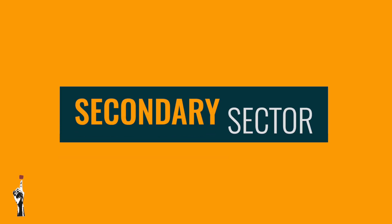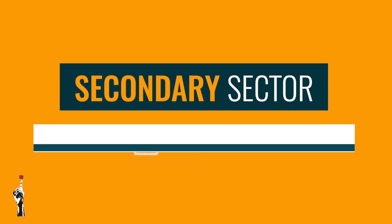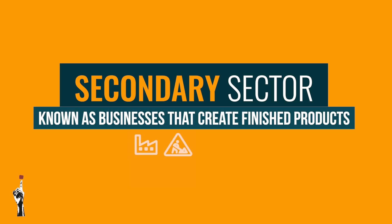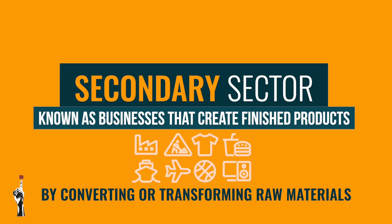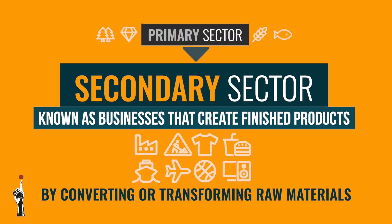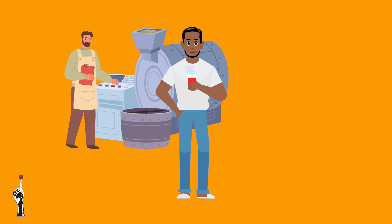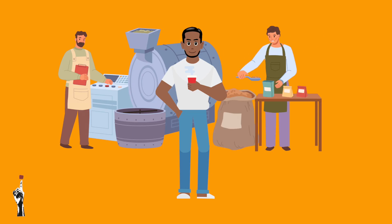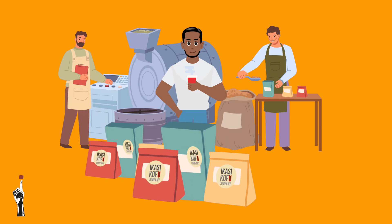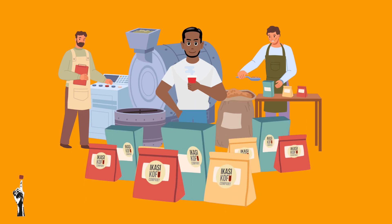The secondary sector is known as businesses that create finished products by converting or transforming raw materials extracted from the primary sector. As you can see, Kamba is visiting a local factory that converts the raw coffee beans into coffee packs that he can sell or use in his business.